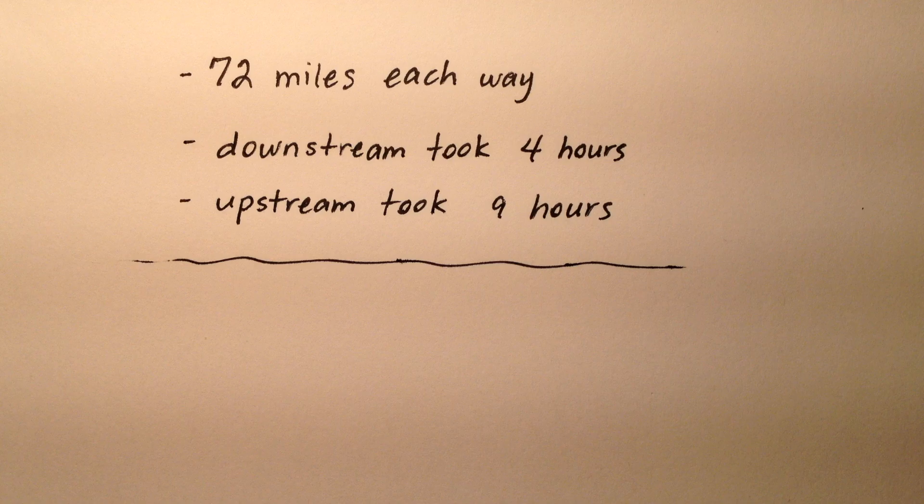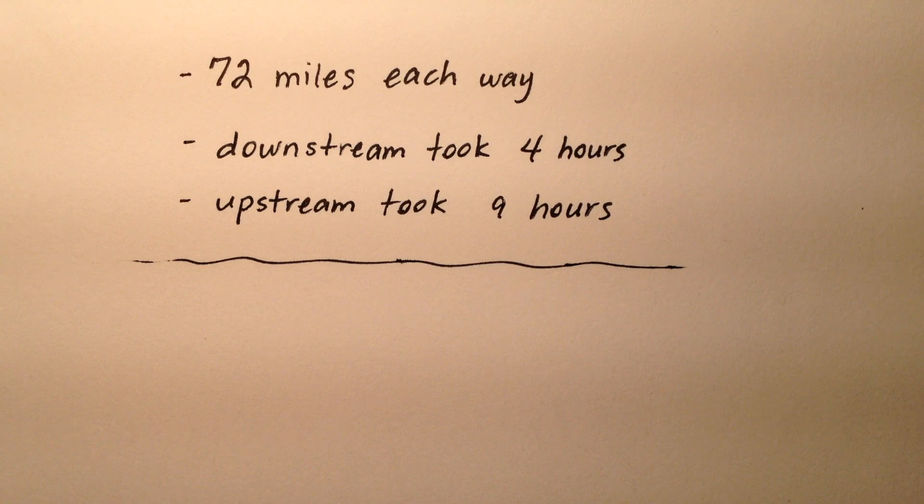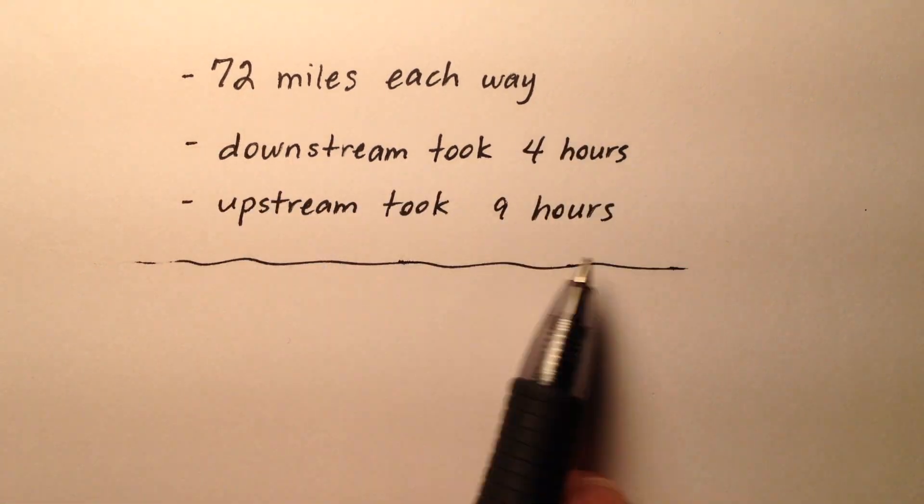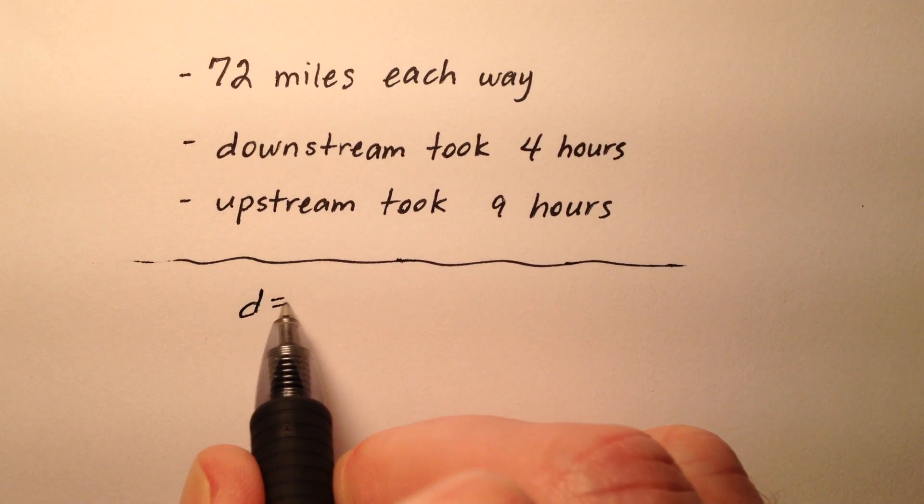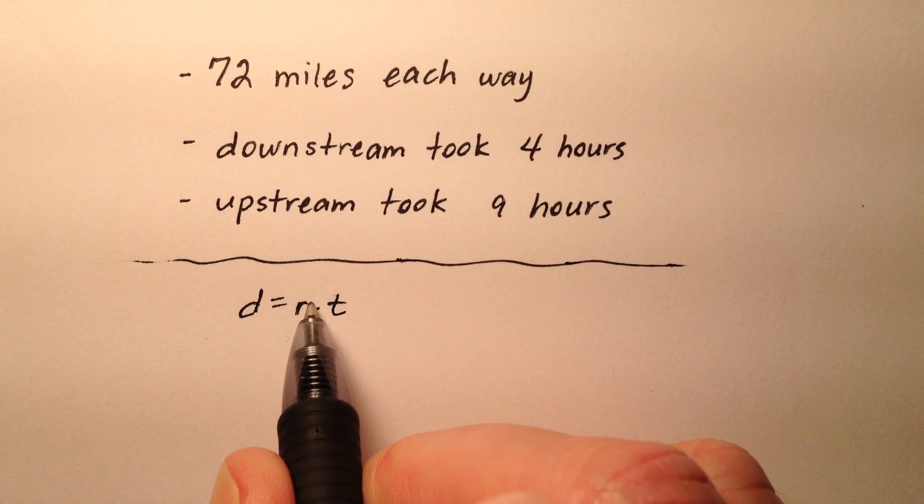So what we're looking for is the speed of the boat in stillwater, essentially just the speed of the boat, and then what is the speed of the current as well. Here are the pieces of information that we have. We also know that distance equals rate times time.